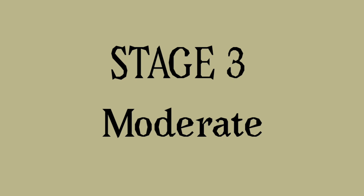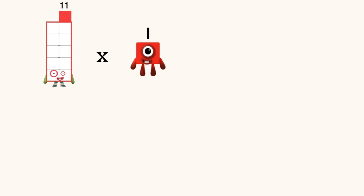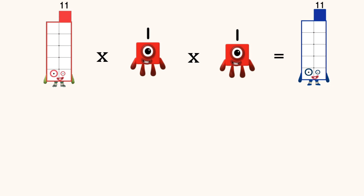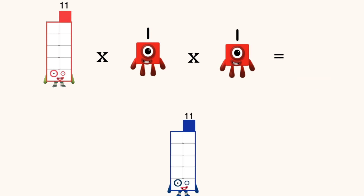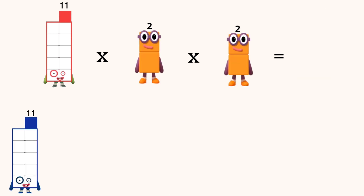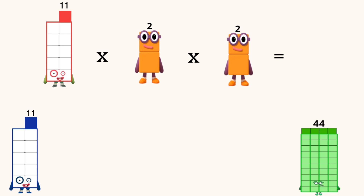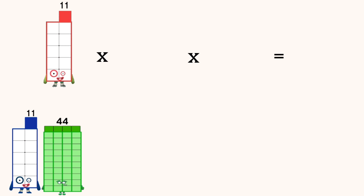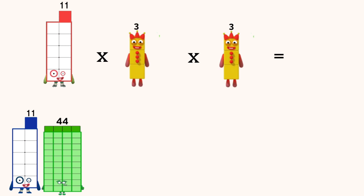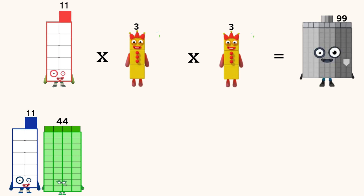Stage three, moderate level. Eleven times one times one equals eleven. Eleven times two times two equals forty-four. Eleven times three times three equals ninety-nine.